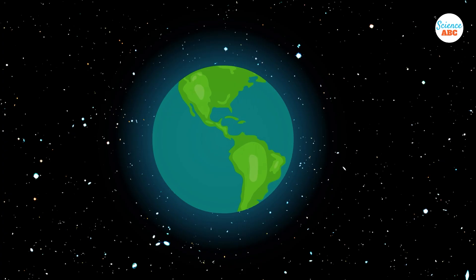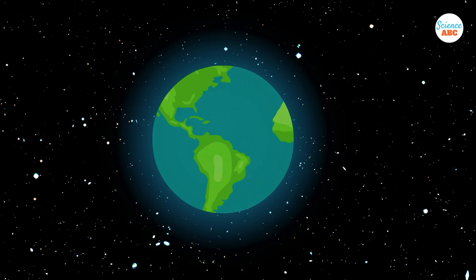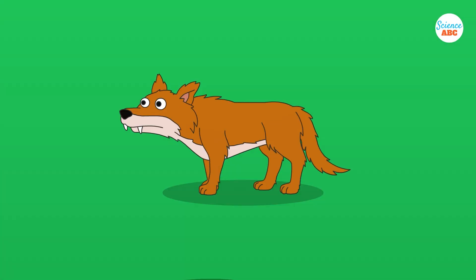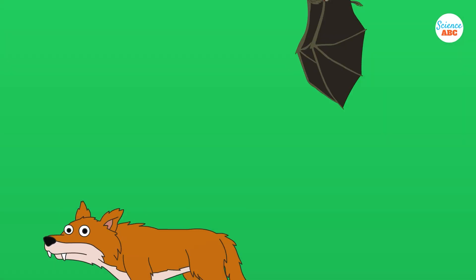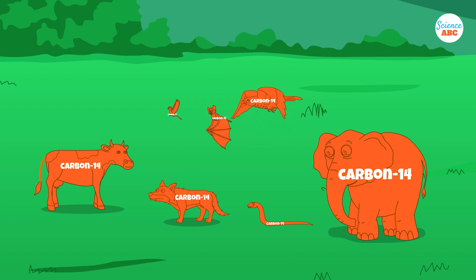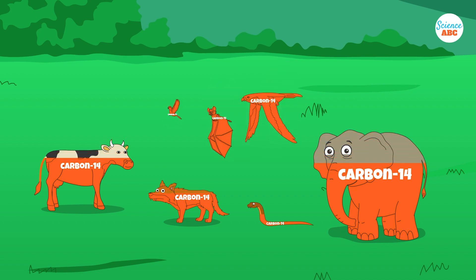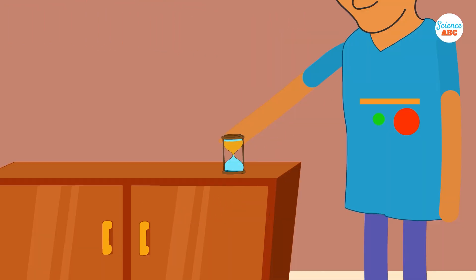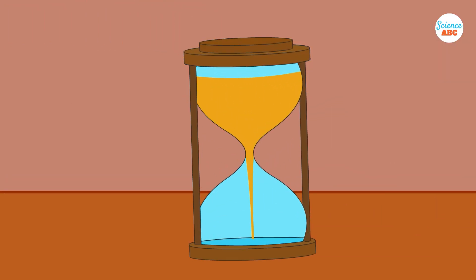All organic materials on Earth contain a trace amount of carbon-14. As carbon-14 decays over time, it causes the quantity of carbon-14 in the material to decrease. To better understand this, think of an hourglass where the sand gradually decreases as time passes.